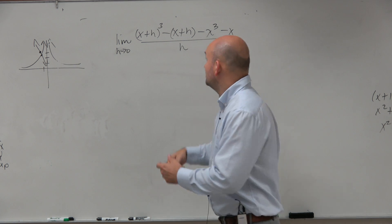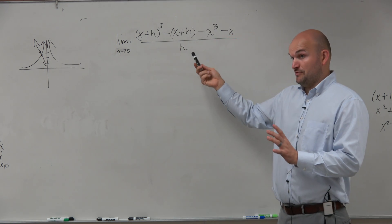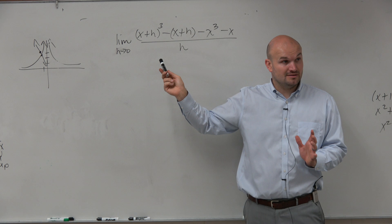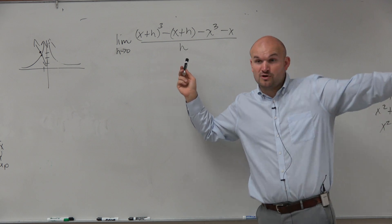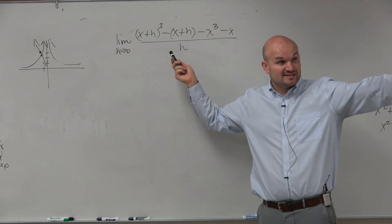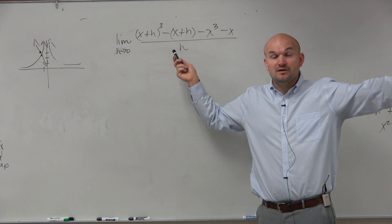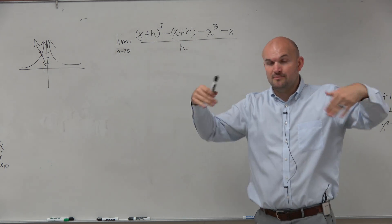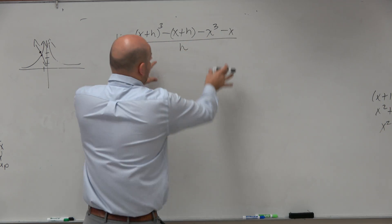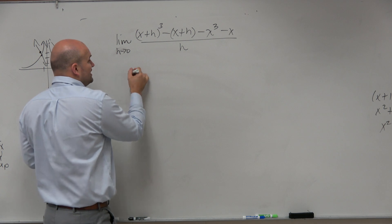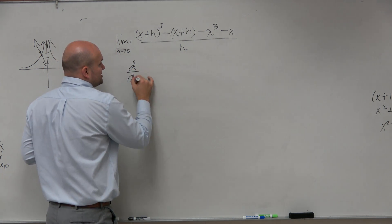So when you have a problem like this, could we go ahead and simplify this if we wanted to and then evaluate the limit? Yes, but look how much work Finn did. Do you guys think this is going to cause more work? Yeah, so there's no problem with doing that. But what I want you guys to understand is, this is really just equivalent to me just saying, what is the derivative of a function?